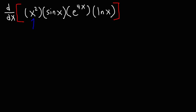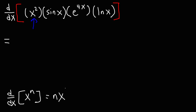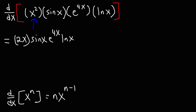Let's begin with the derivative of x squared. We have a variable raised to a constant — using the power rule, the derivative of x to the n is n times x to the n minus 1. So it's going to be 2x. The other three parts we leave the same, giving us 2x times sine x times e to the 4x times the natural log of x.